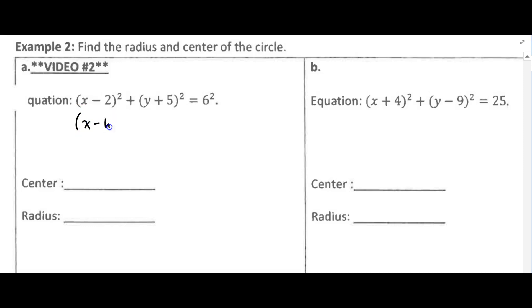So remember we have (x - h)² and the x minus h represents one leg of that right triangle that we made, and (y - k)² is equal to r².